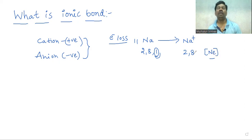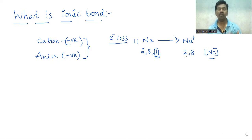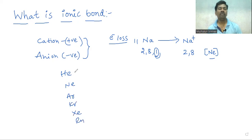Every atom tries to attain the nearest noble gas electronic configuration. The inert gases are helium, neon, argon, krypton, xenon, and radon. These elements are very stable and their reactivity is very low.